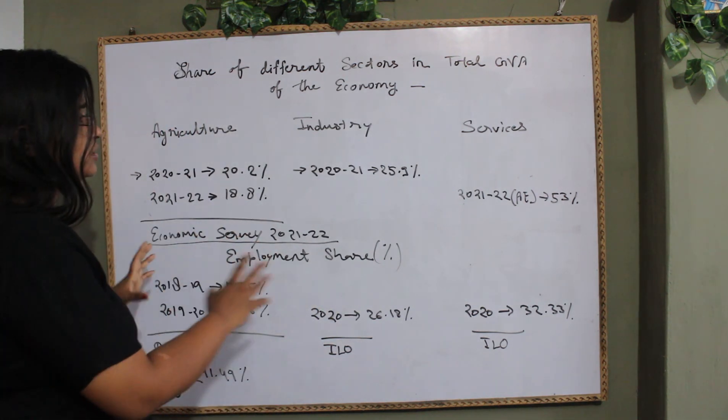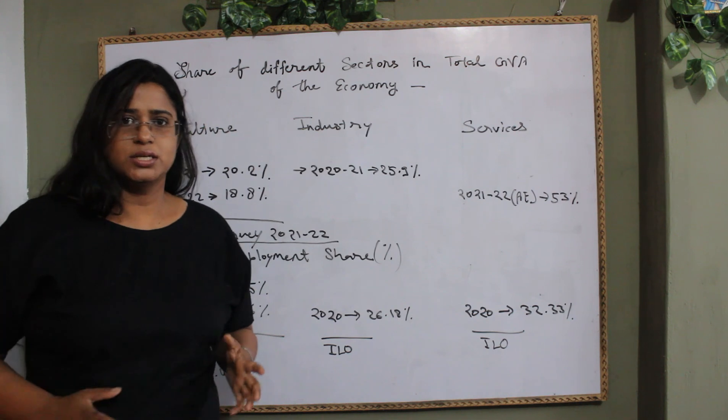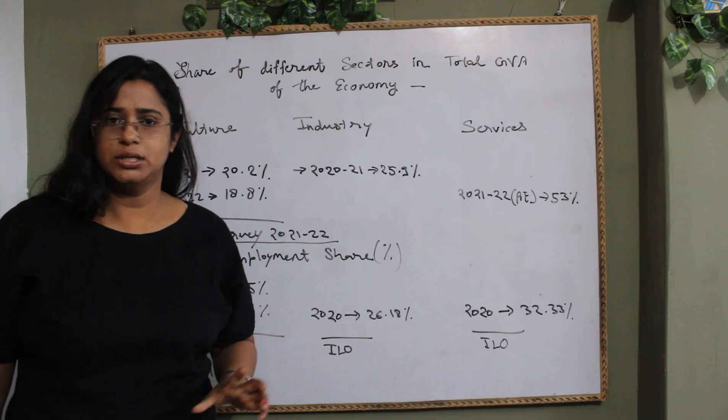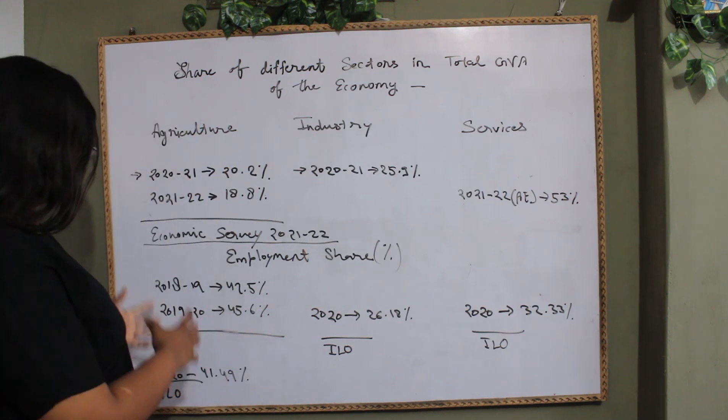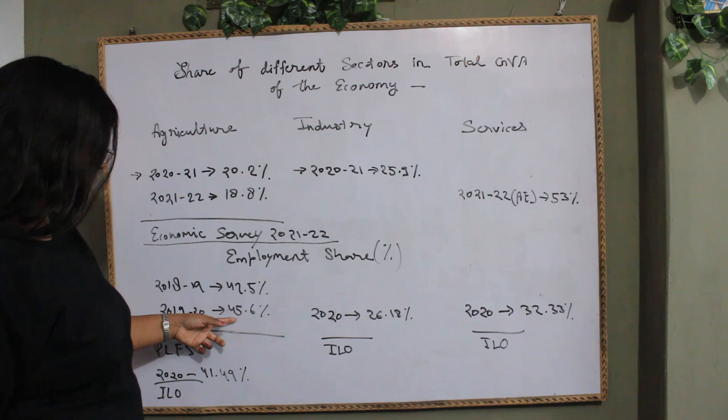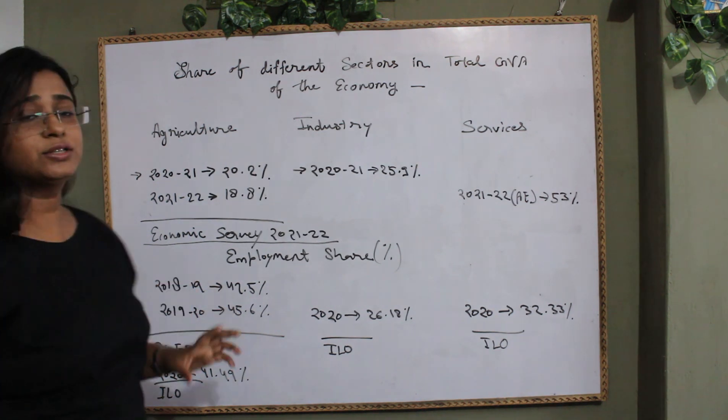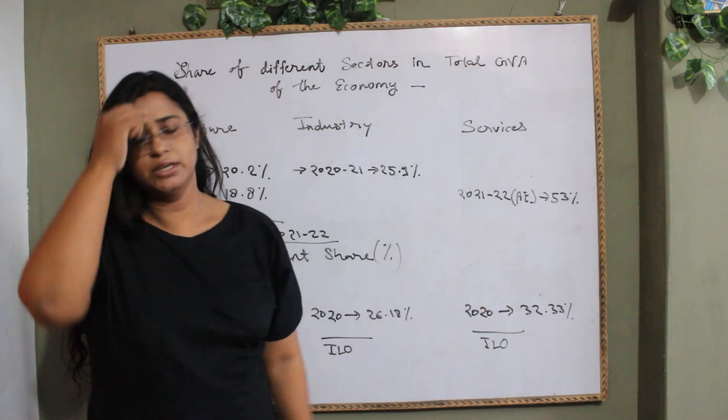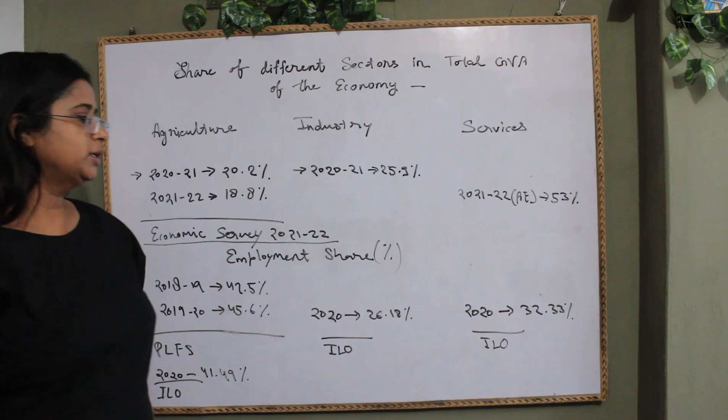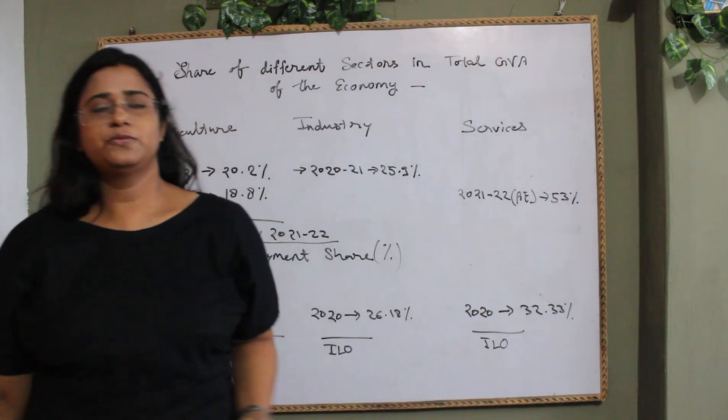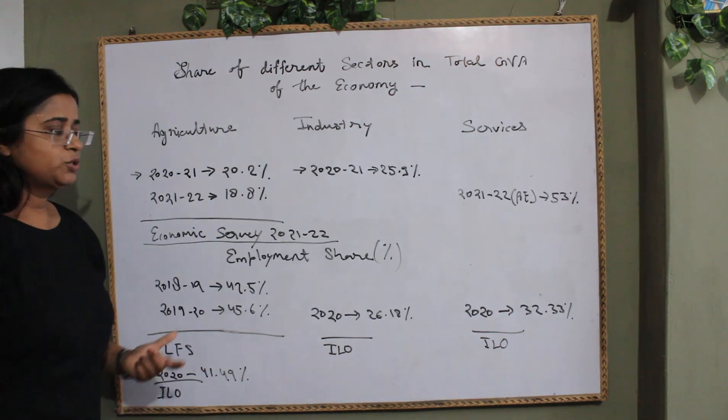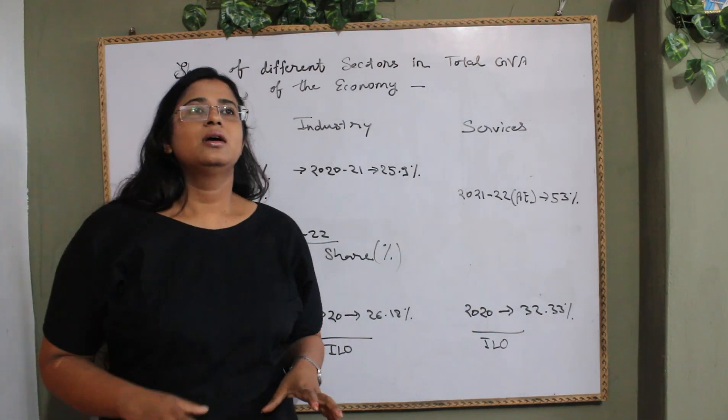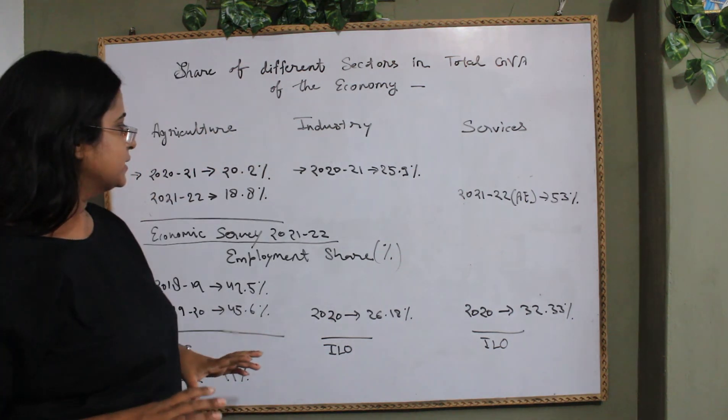But these two sectors are misadjusted somewhat. So, I will take this 18% share in the GVA and absorbed as high as 45.6% in 1920. So, it's a long-sided balance. And here also 53% in the GVA, while absorbed only 32.33% of the labor force in 2020. So, why this phenomenon is here? What is the reason behind this?